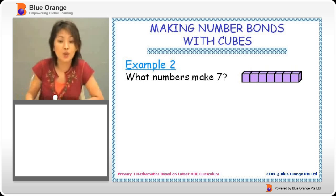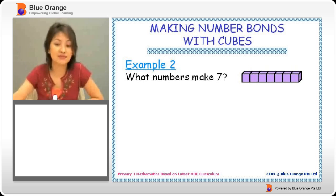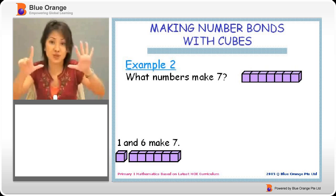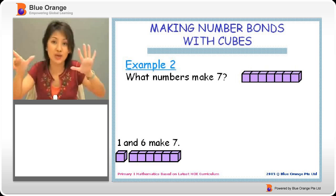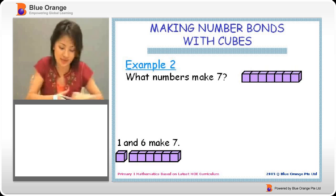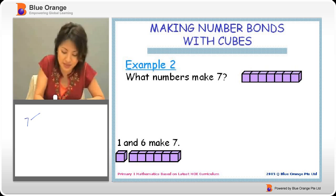Another example. What numbers make seven? This is quite interesting. How are you going to split seven? First of all, we can say one and six, right? So, we have seven. We have seven. One, if you put it away, one and six make seven. So, we can say that seven can be split into one and six.